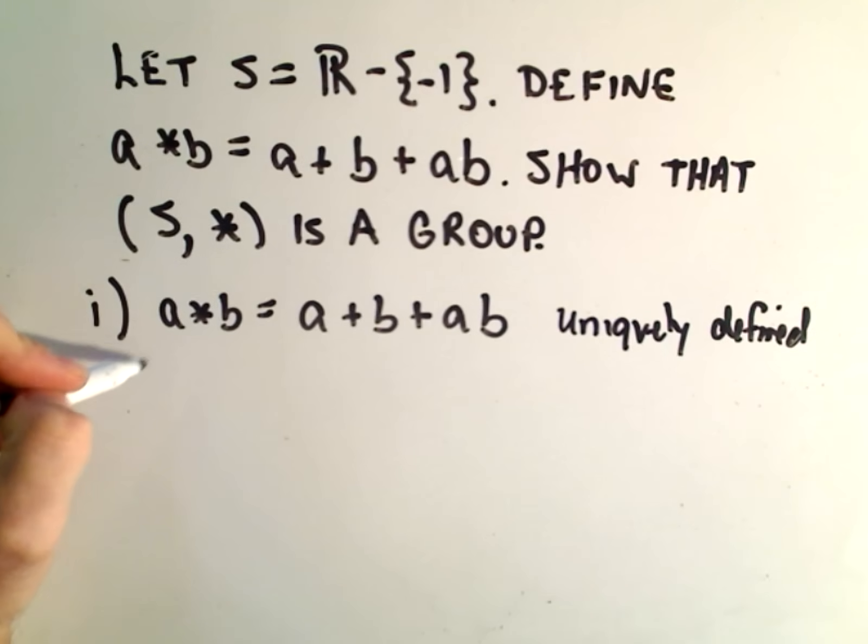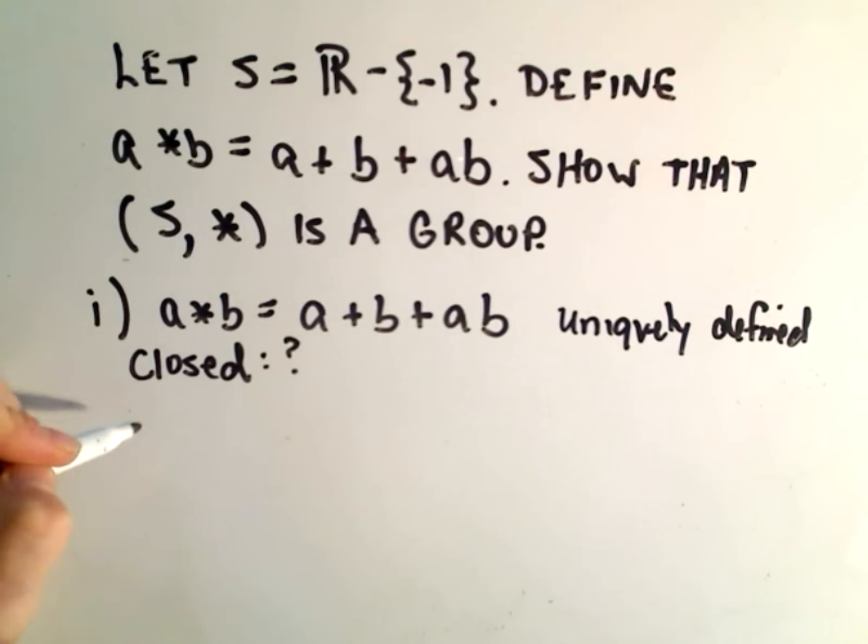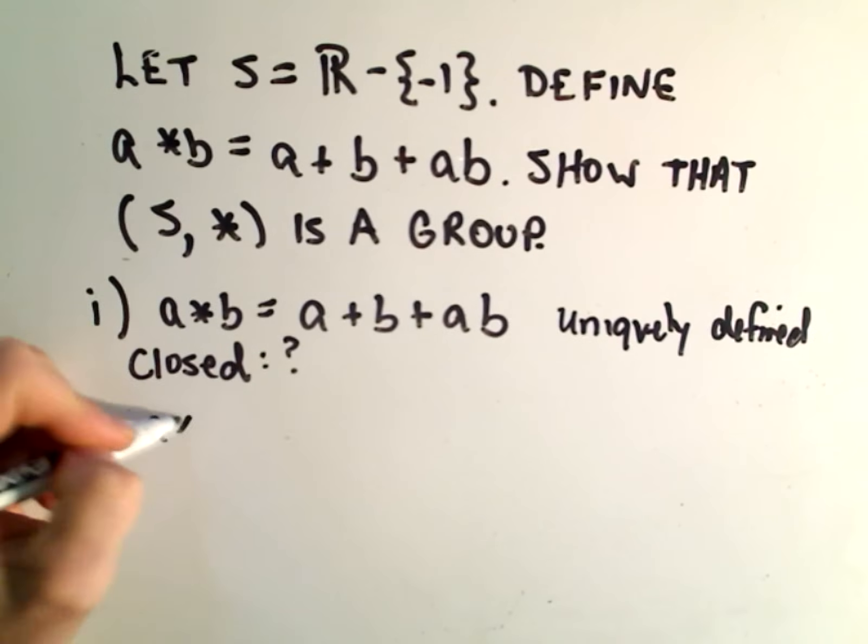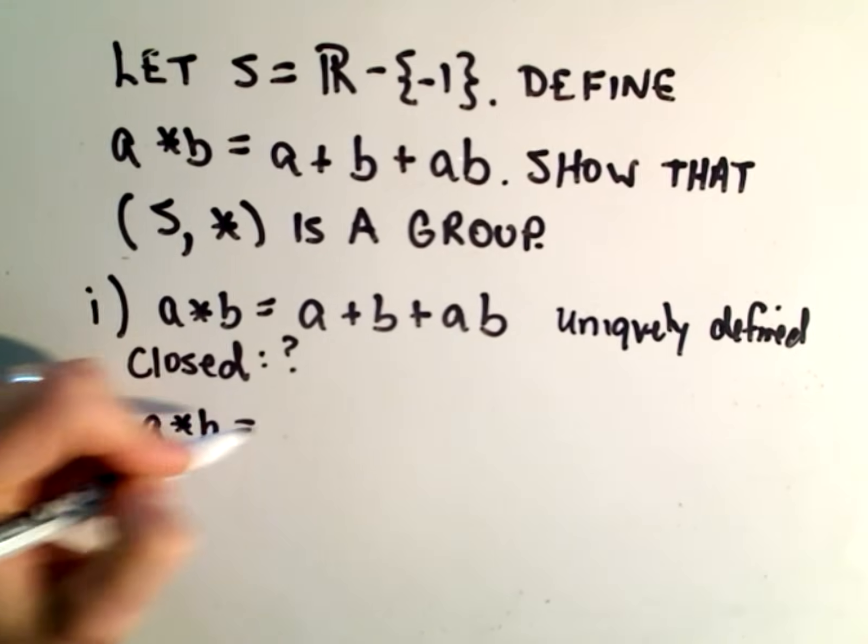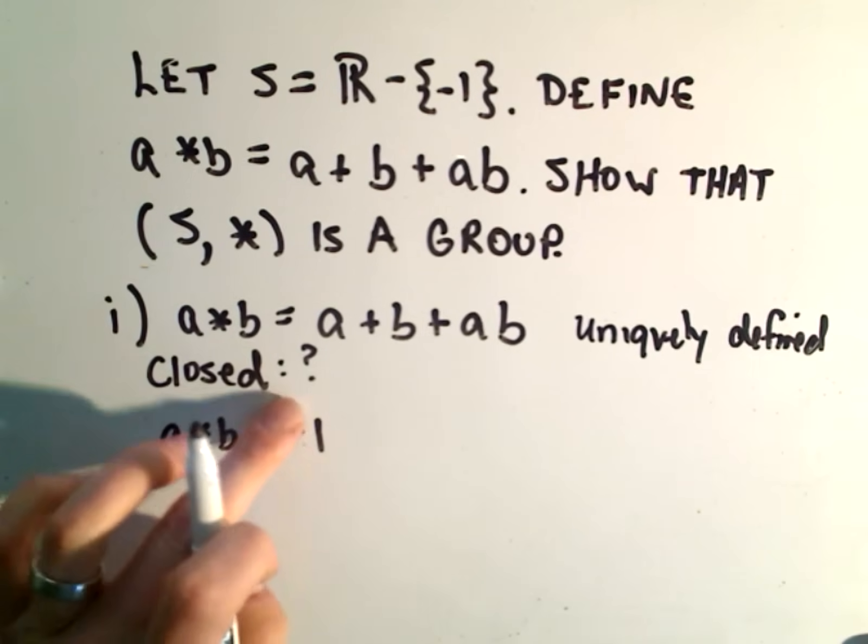The question is, is it closed? The only way it could not be closed is if A star B somehow equaled negative one, because that's the element that we're leaving out of our group here.